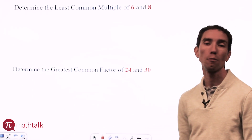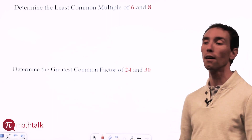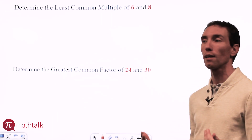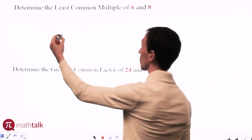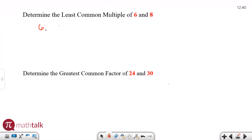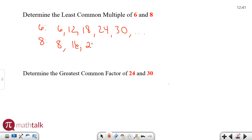And for 8 you have 8, 16, 24, 32, and so on. You need to find the two multiples that are the same but the smallest between the two. I like to just write out the multiples. So for 6 I have 6, 12, 18, 24, 30, and so on. And for 8 I have 8, 16, 24, 32, and so on. Between those I need to find which ones are the same and which is the smallest that they both share.